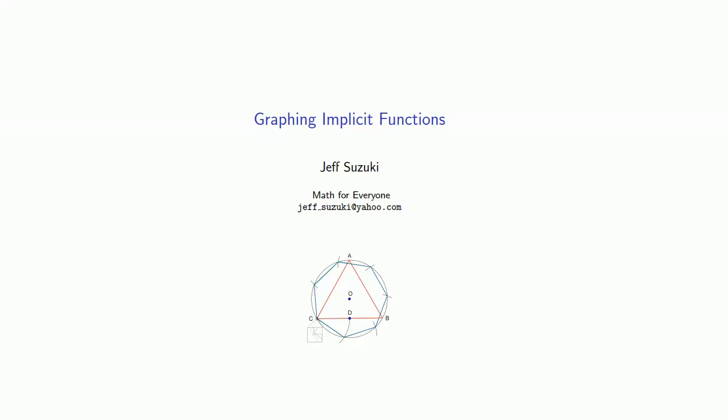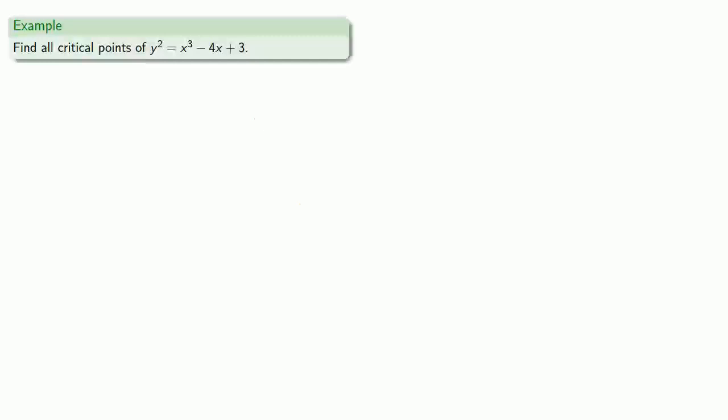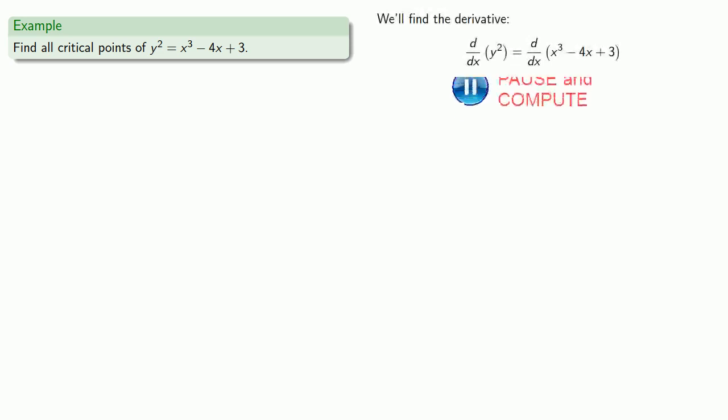Let's see if we can use calculus to help us graph implicit functions. We'll try to find all critical points for the function defined implicitly by y squared equals x cubed minus 4x plus 3. First, we'll find the derivative.